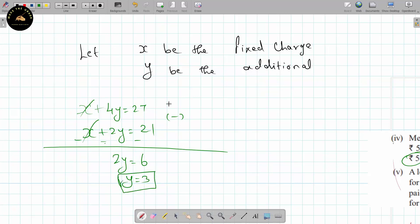For Saritha: x plus 4y equals 27. For Suzy: x plus 2y equals 21. Subtracting: 4y minus 2y equals 27 minus 21, so 2y equals 6, therefore y equals 3. Substituting back: x plus 6 equals 21, so x equals 15. The fixed charge is 15 rupees and the additional charge is 3 rupees per day.